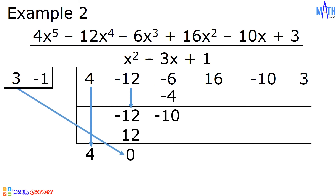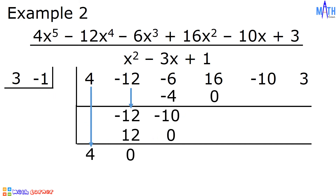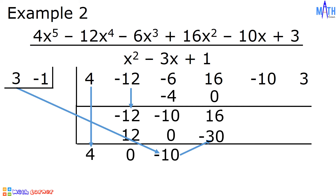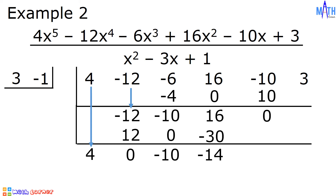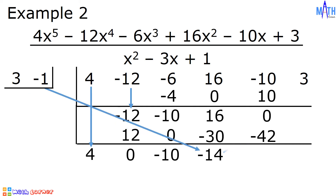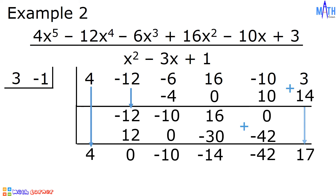Let us repeat the process. 3 times 0 is equal to 0. Negative 1 times 0 is equal to 0. Let us add: negative 10 plus 0 is equal to negative 10. 16 plus 0 is equal to 16. 3 times negative 10 is equal to negative 30. Negative 1 times negative 10 is equal to positive 10. Let us add: 16 plus negative 30 is negative 14. Negative 10 plus 10 is equal to 0. Next, 3 times negative 14 is equal to negative 42. Negative 1 times negative 14 is equal to positive 14. Let us add: 0 plus negative 42 is equal to negative 42. 3 plus 14 is equal to 17.